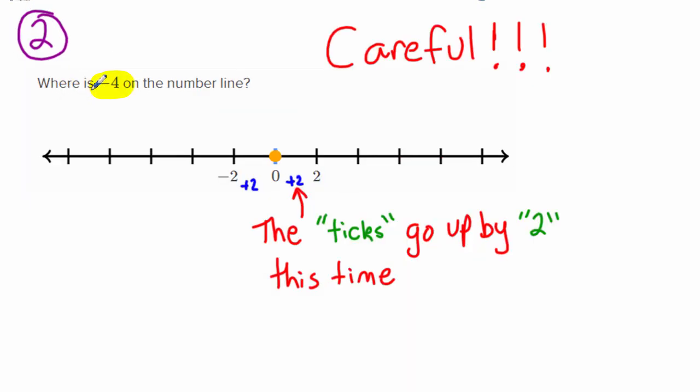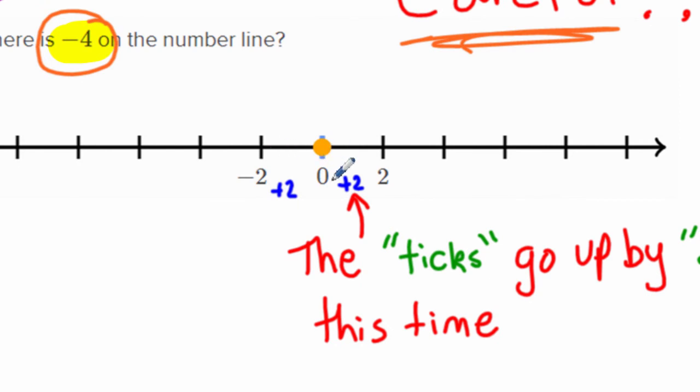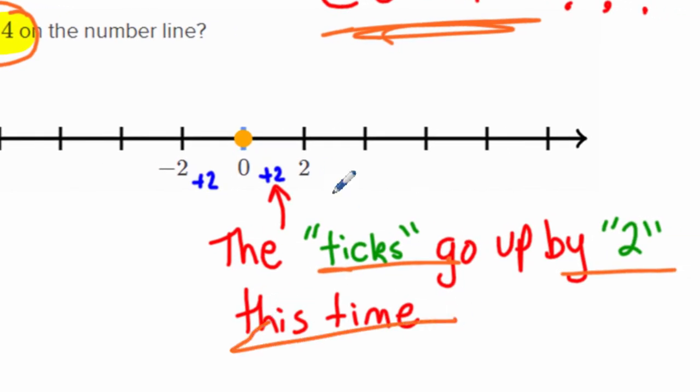So then the next one here, we want to check out where's negative four at? I have no idea. Oh, be careful on this one. Because look, it does not go up by ones, it goes up by two. So we got plus two, so ticks go up by two this time.